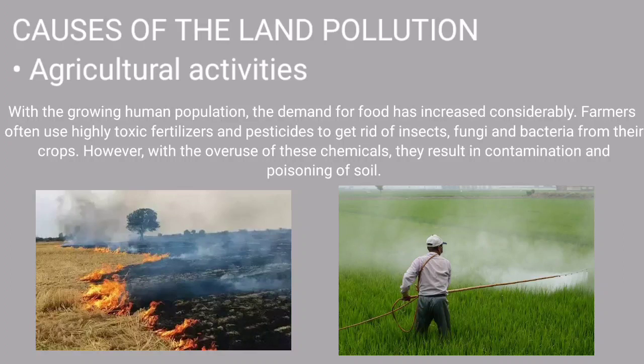Next is agricultural activities. With the growing human population, the demand for food has increased considerably. Farmers often use highly toxic fertilizers and pesticides to get rid of insects, fungi, and bacteria from their crops. However, the overuse of those chemicals results in the contamination and poisoning of the soil. Improper farming techniques like slash-and-burn are also a major cause of soil contamination and poisoning.